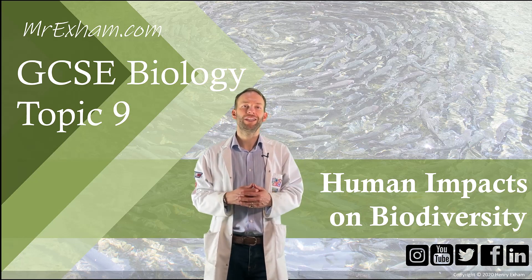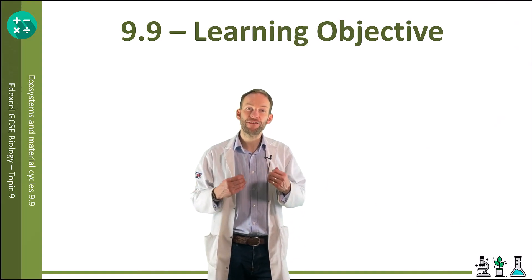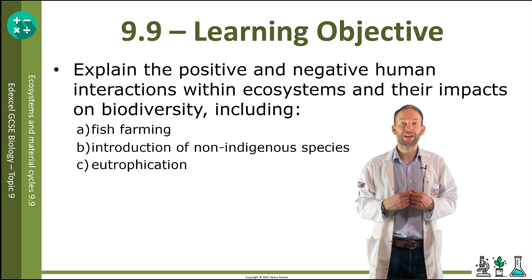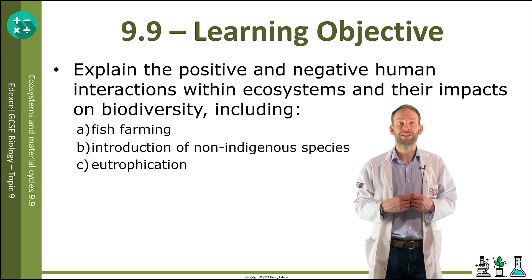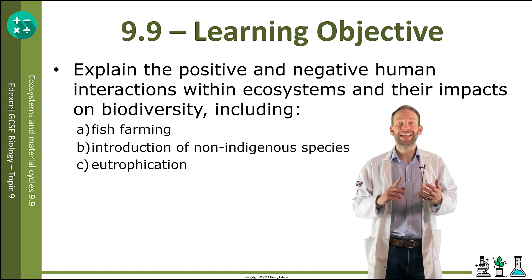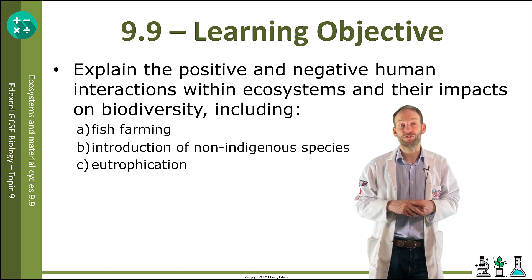Objective 9.9: explain the positive and negative human interactions within ecosystems and their impacts on biodiversity, including fish farming, introduction of non-indigenous species, and eutrophication.